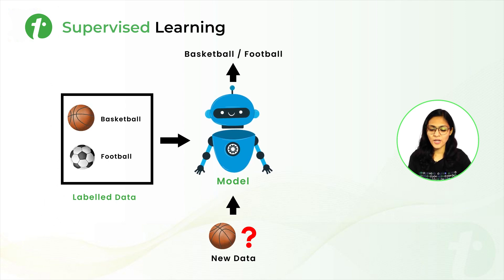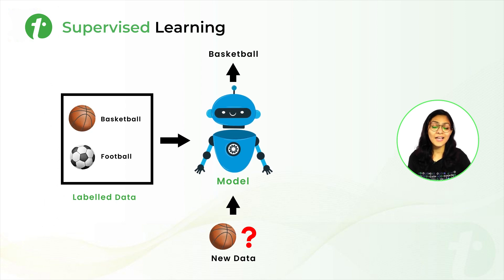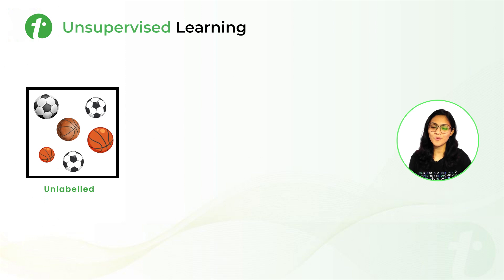So in this case, we are providing this ball to the model and it is telling us that it is a basketball. So next is Unsupervised Learning.